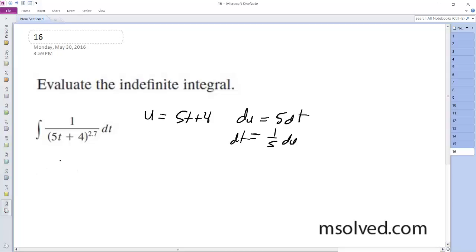So we have u to the negative 2.7, 1 fifth du. It's going to be equal to 1 fifth times negative 1 over 1.7, u to the negative 1.7 plus c.